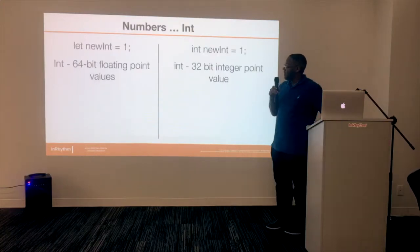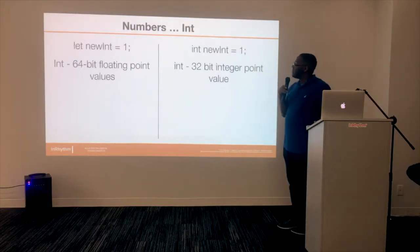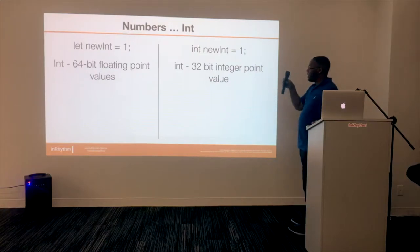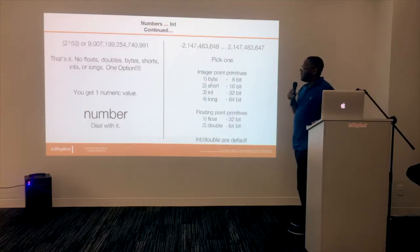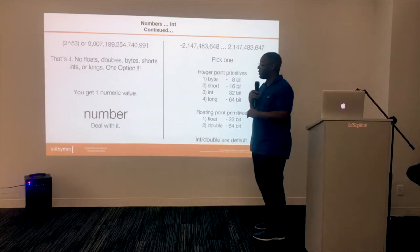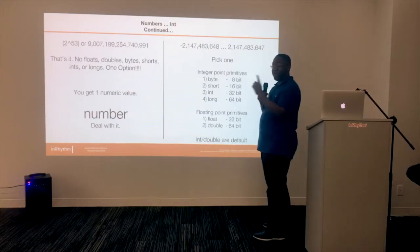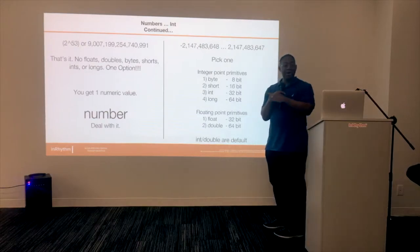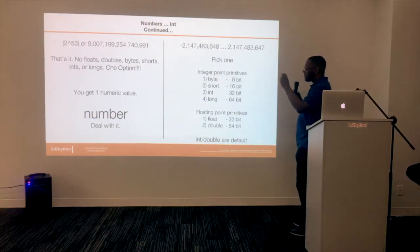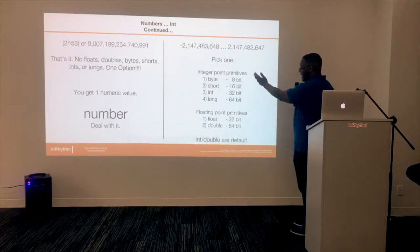Numbers. JavaScript numbers versus Java ints. In JavaScript, you get one 64-bit floating point value — no floats, no doubles, no bytes, no shorts, no longs. You get one option: one numeric value that fits everything your heart desires. In Java, you can pick the optimized size: 8-bit, shorts, ints, longs. The defaults are basically int and double.